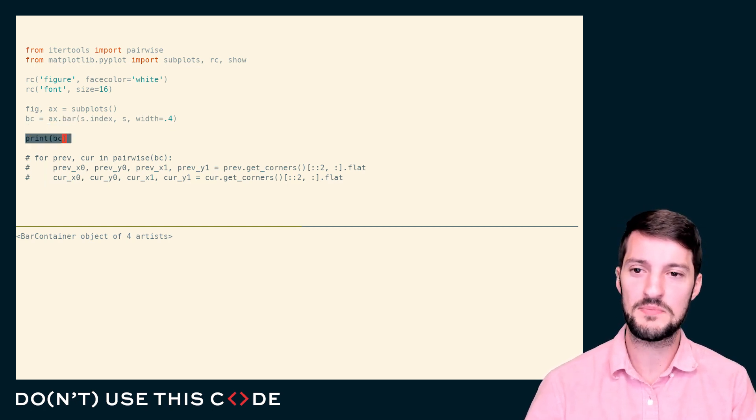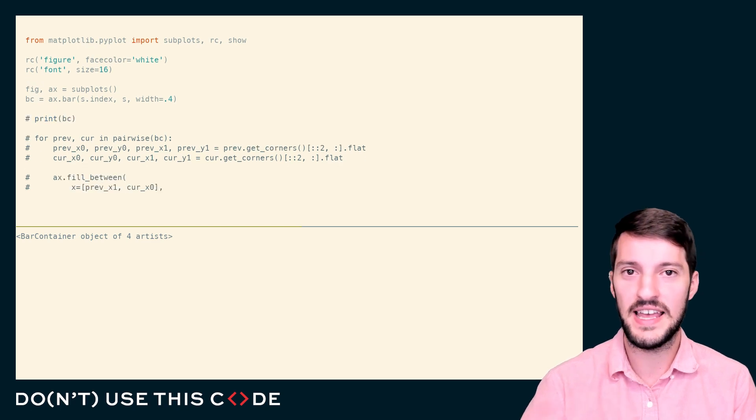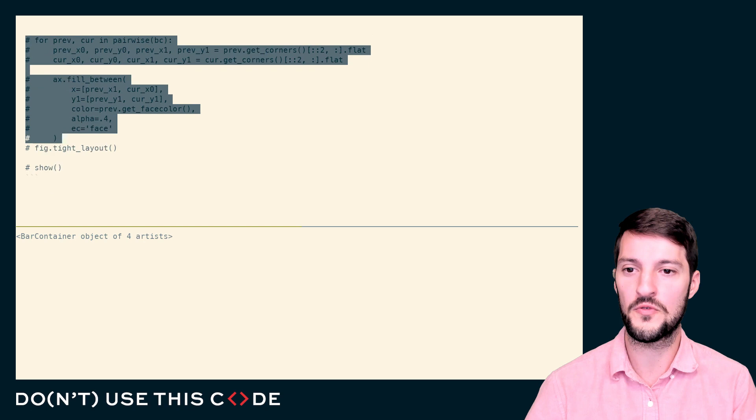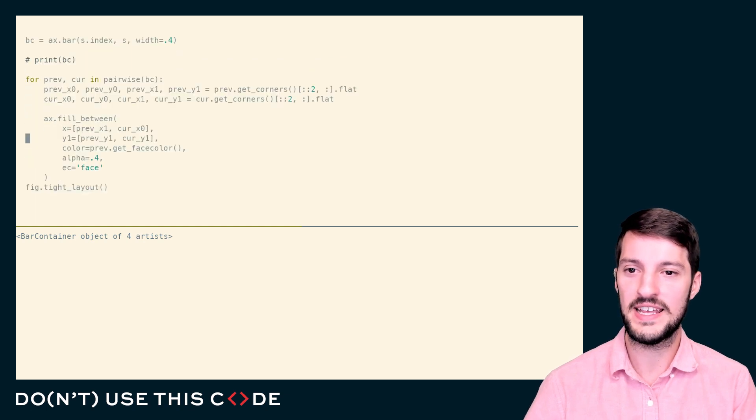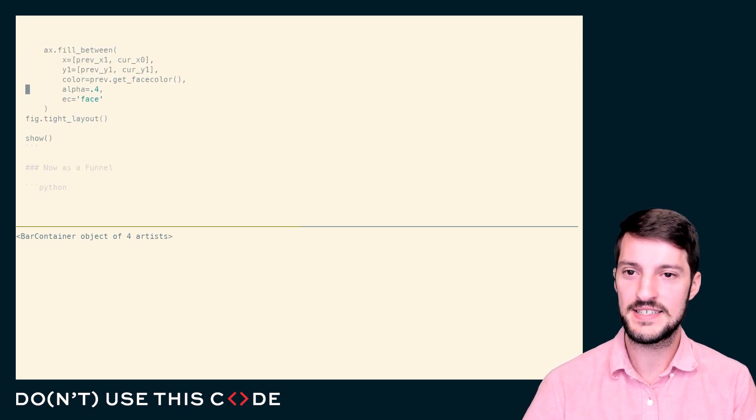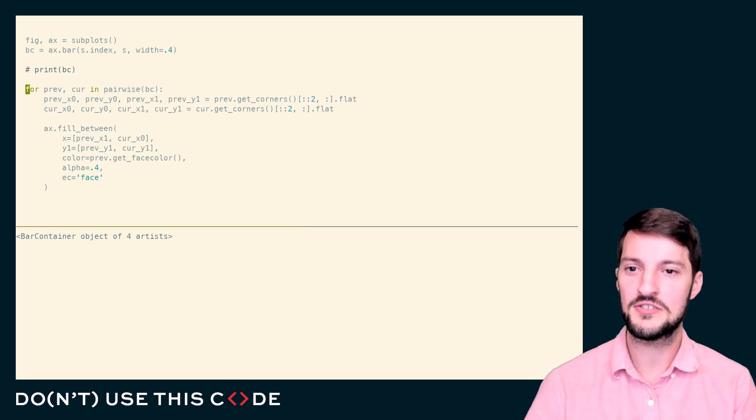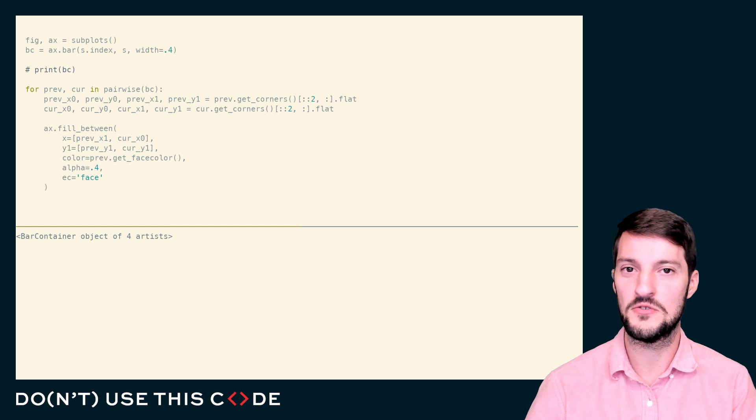What I'm going to do with this bar container is just like any container or any list, I'm going to iterate over them. I'm going to iterate over them in a pairwise fashion. I'm going to be grabbing pairs of two bars at a time. So I'll grab the first and the second bar, the second and the third bar, and then finally, the third and the fourth bar. The reason that I'm doing this is I want to actually draw some linkages, some physical linkages between these bars.